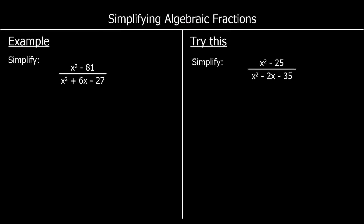And another example. This time we have the difference of two squares on the top of the fraction. We've got x squared minus 81 — they're both squared with a minus between them. So that will factorise to (x plus 9)(x minus 9). That's the difference of two squares.